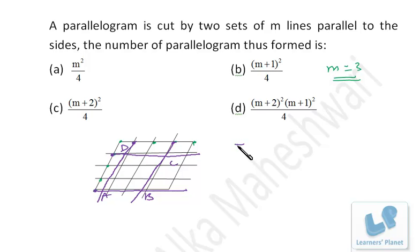I need to select two points from this line and simultaneously I have to select two points from this line. So it's 5C2. Now 5C2 is what? 10. Into this 10, that is 100. So how many parallelograms I'll be getting? That is 100 parallelograms I'll be getting.